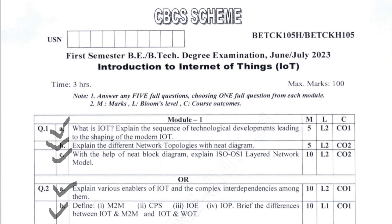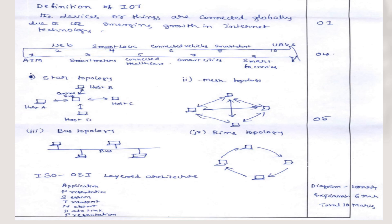Now moving into the scheme. The definition of IoT carries 1 mark — it is a device connected globally, an internet technology which stores all real-time data. The next part of the question covers other technologies contributing to IoT. For that explanation you will have 4 marks, and for the definition of IoT you will have 1 mark.